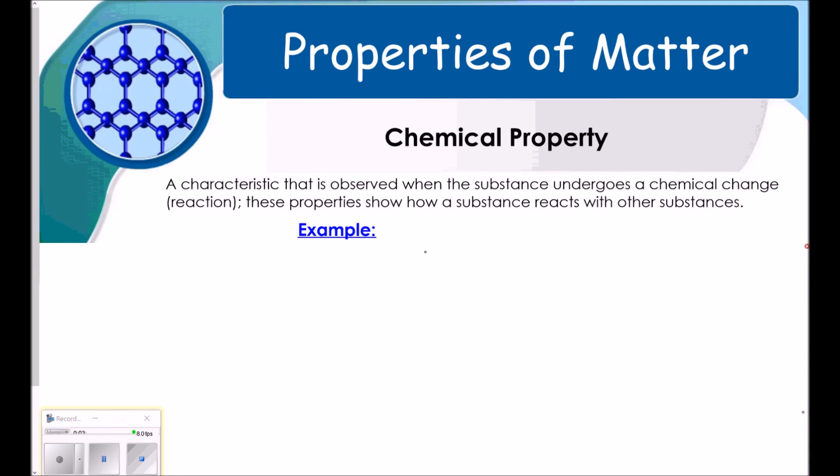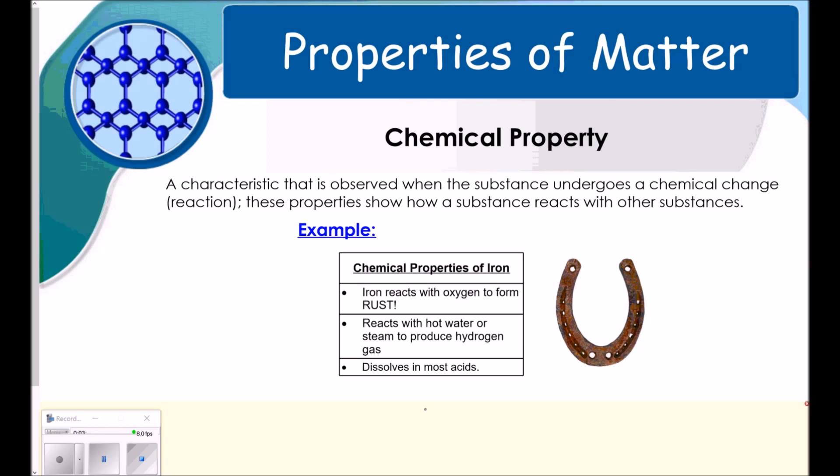Okay, chemical properties. It's a characteristic that's observed when the substance undergoes a chemical change or reaction. These properties show how a substance reacts with other substances. So, these are interactions between two substances. For example, iron reacts with oxygen to form rust. It reacts with hot water or steam to produce hydrogen gas. And it dissolves in most acids. So, this is how iron interacts with other things. That's a chemical property of iron.